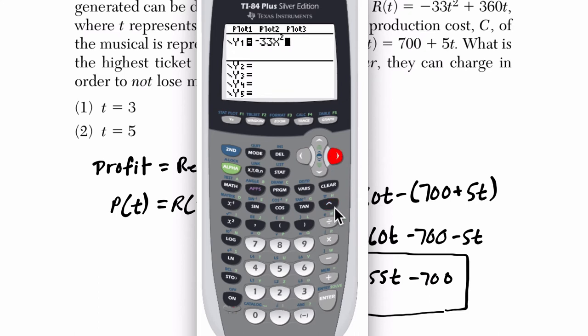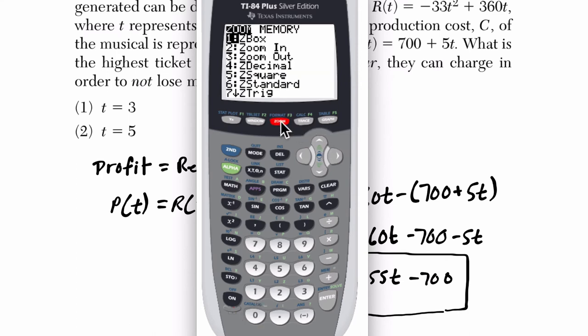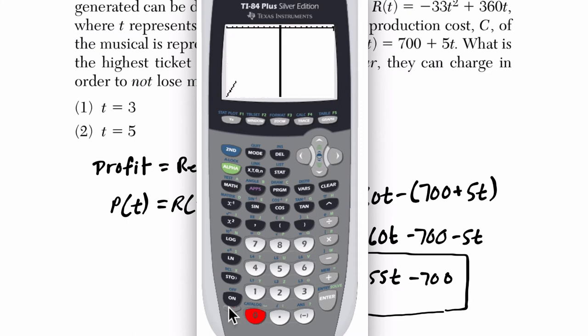And then we had plus 355T or X and then minus 700. So I'm going to go to zoom first and then press zero to fit the graph. Let's see what we get.